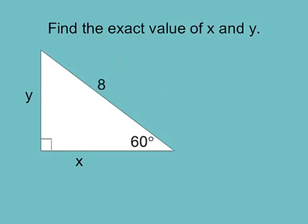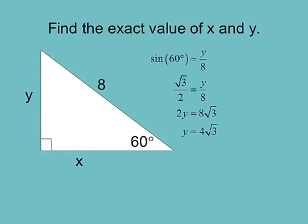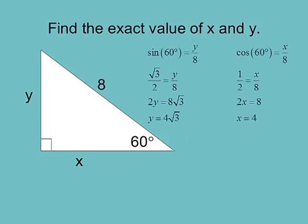Find exact x and y in a 60° triangle with hypotenuse 8. Sine of 60° = y/8 — opposite over hypotenuse. Sine of 60° = √3/2, so cross-multiplying: 2y = 8√3, giving y = 4√3. Then cosine of 60° = x/8 — adjacent over hypotenuse. Cosine of 60° = 1/2, so 2x = 8, giving x = 4. We have the exact values of x and y.